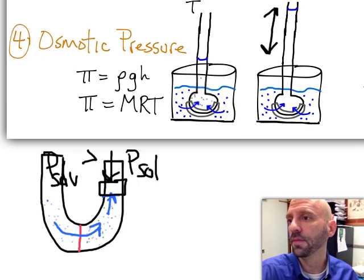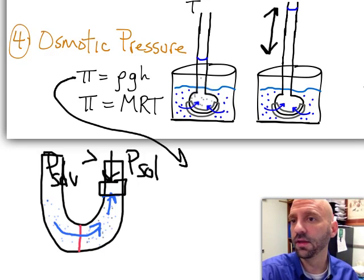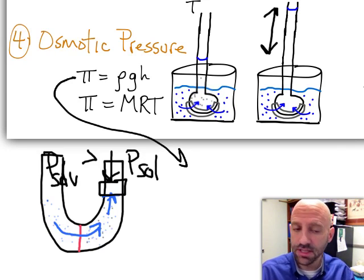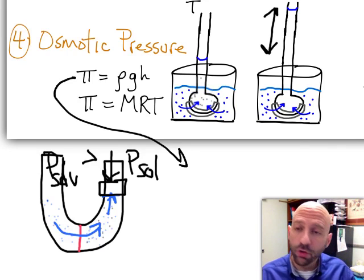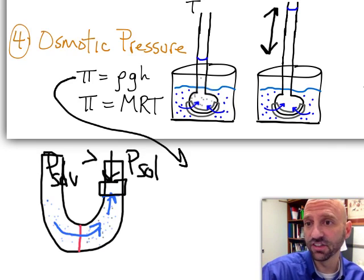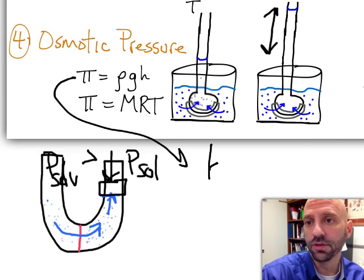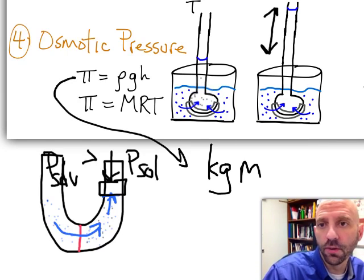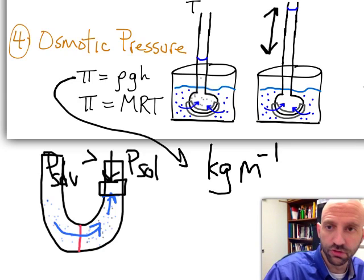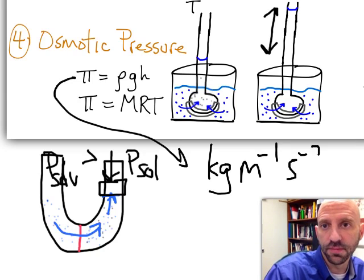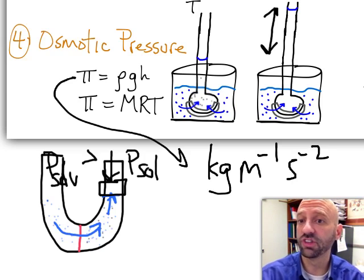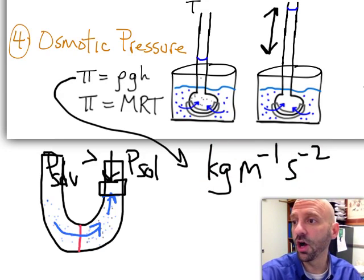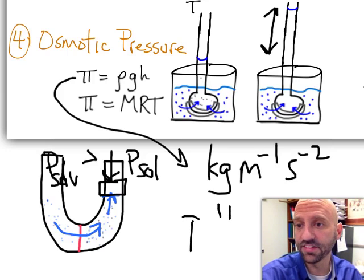One thing to keep in mind, if we think about the osmotic pressure from this top equation, you have rho, you have g, you have h. As you go through and do a dimensional analysis, you're going to get the osmotic pressure with the units of kilogram per meter per second squared. Just want to make sure I'm copying this down right. Kilogram per meter per second squared. And that is a particular unit. All of that is equal to a pascal.